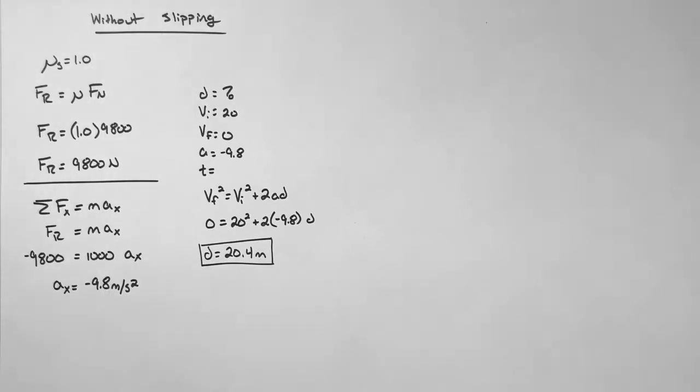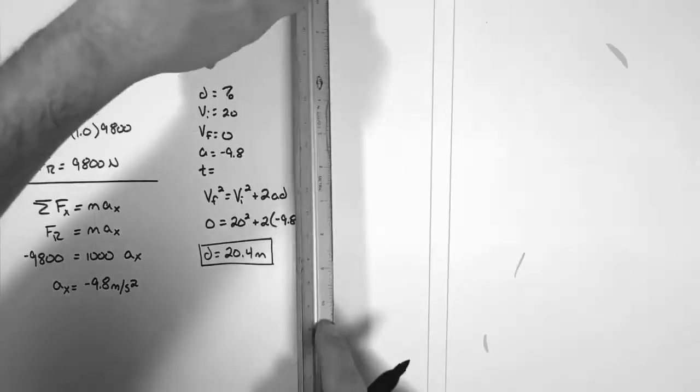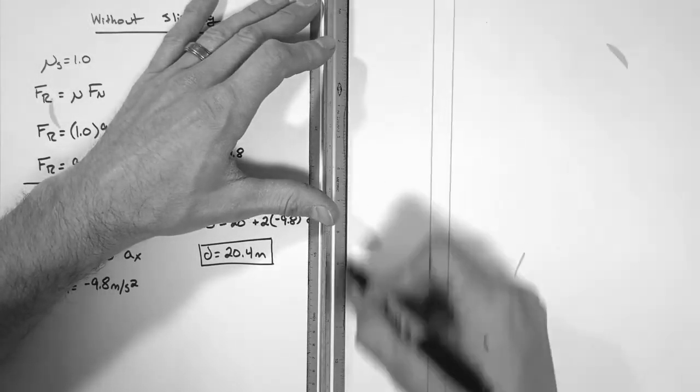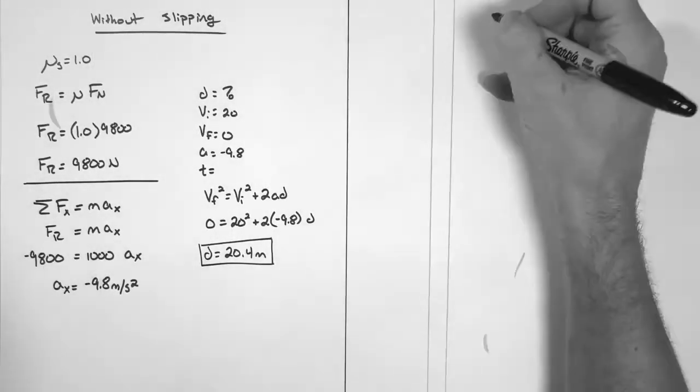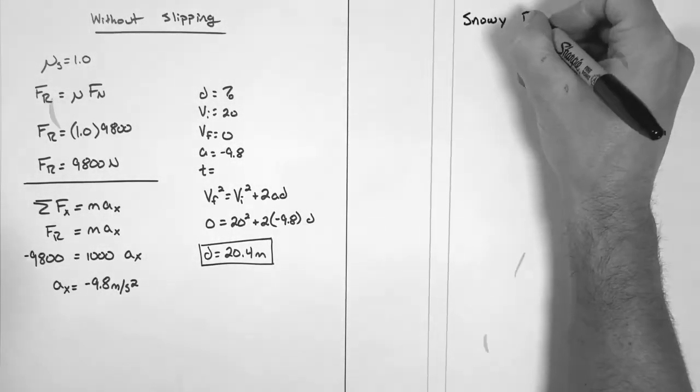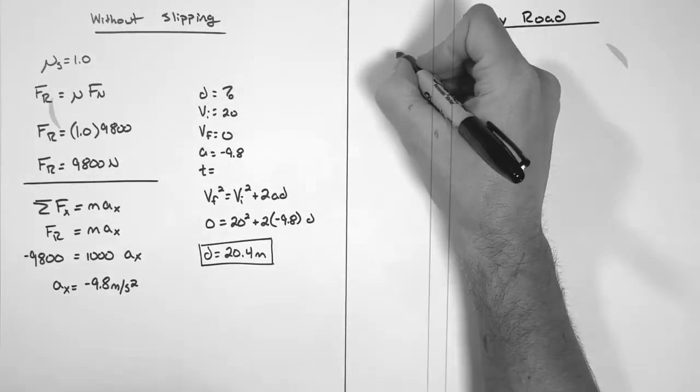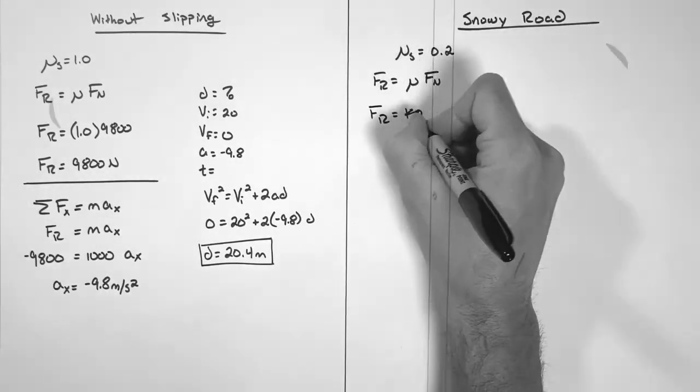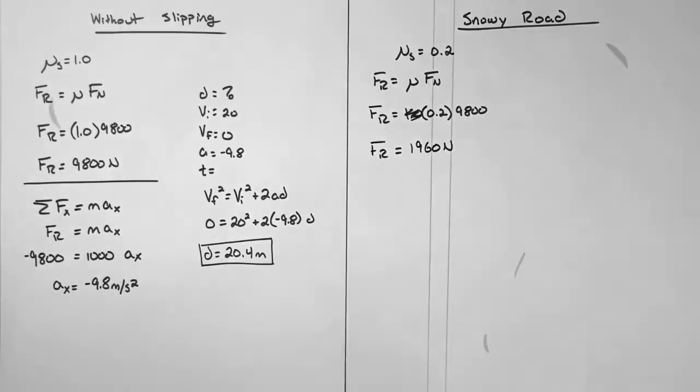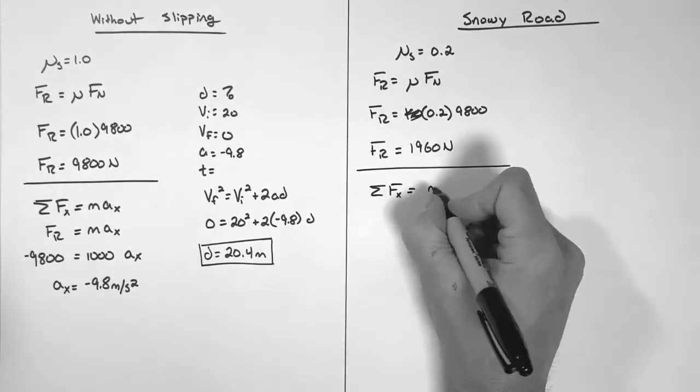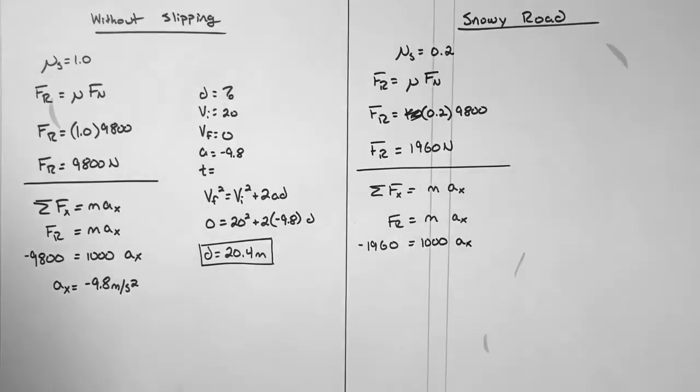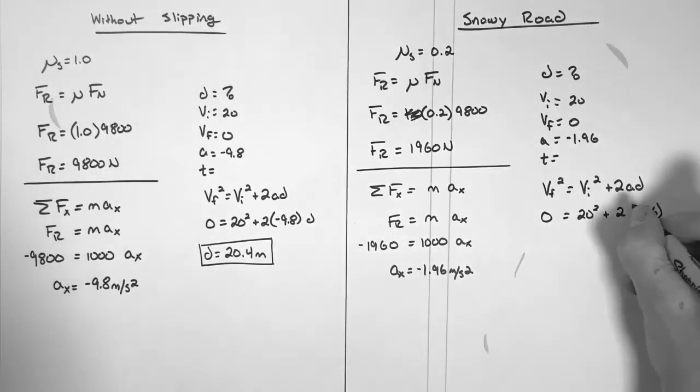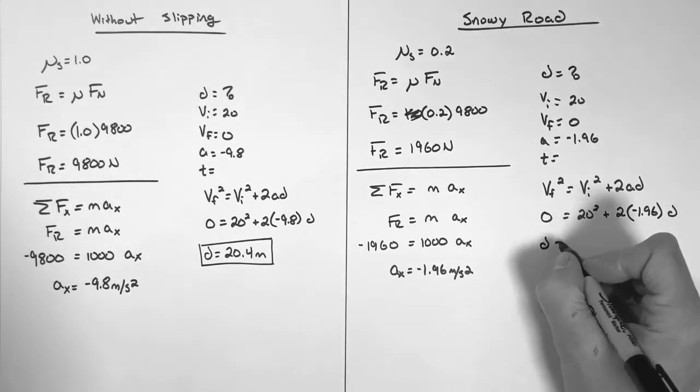This improvement in braking distance is what's led to technologies such as antilock brakes, which prevent the car tires from ever locking up, thus maintaining static friction against the road. Now let's take a look at what happens to this stopping distance if Horace tries to drive this car down a snowy road, where the coefficient of friction is only 0.2. This time around, we find the car tires are only producing 1,960 newtons of friction against the road. That's much less than on a nice dry road. Plugging that friction value into Newton's second law, and then the kinematic equations, we find the total stopping distance of the vehicle is now 102 meters.